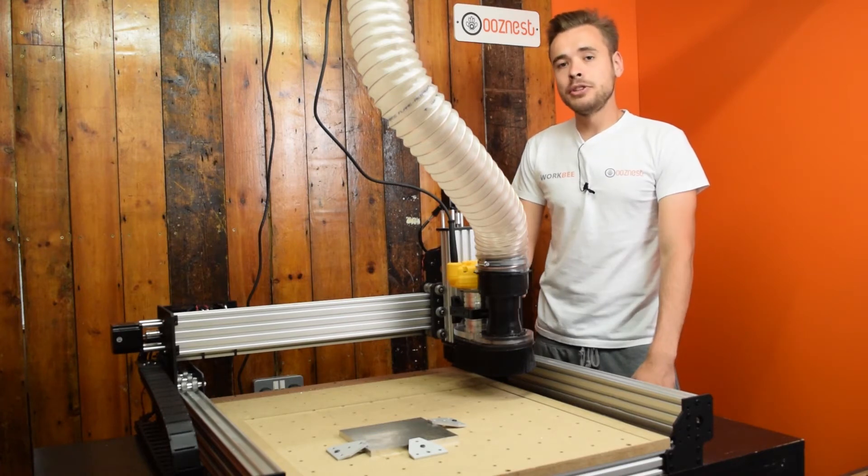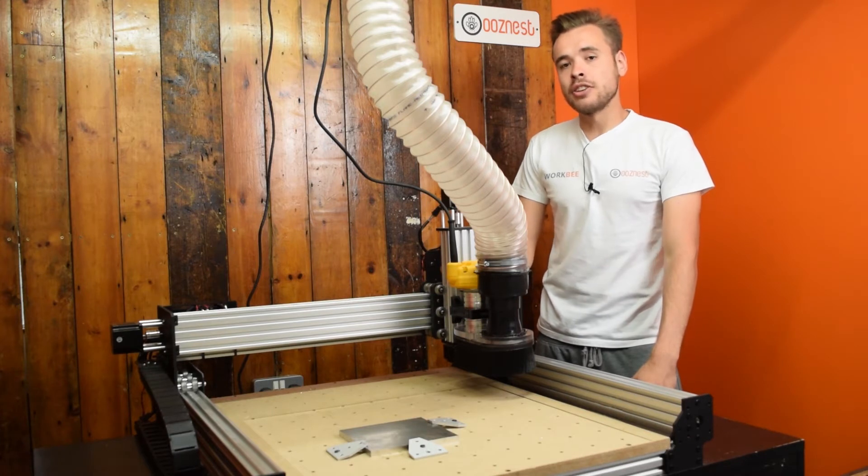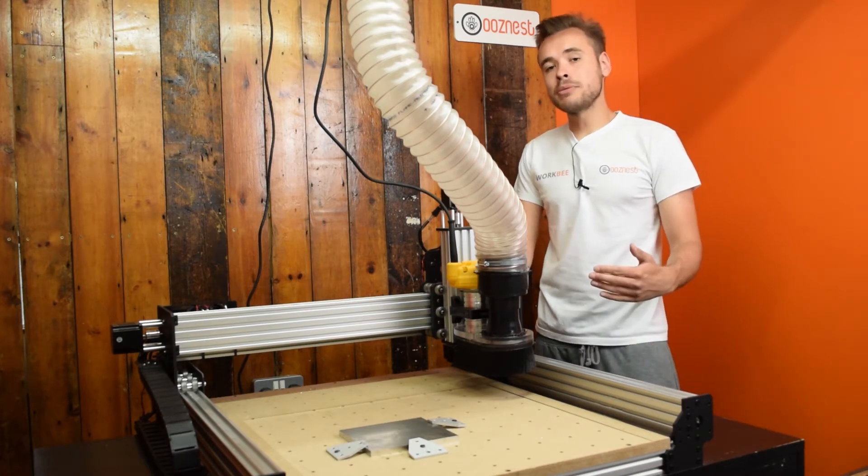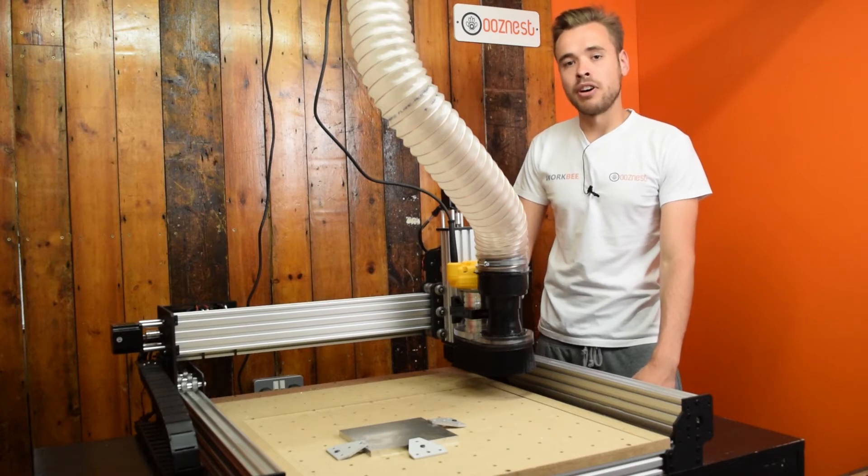And then using the same formula for the X and Y axis we can calculate the steps per mm for the Z axis. So I've done other YouTube videos on setting up jobs on the Workbee CNC machine. So if you'd like to do that the link will be in the description. So I'm going to skip past that on this step and just start the job right now.